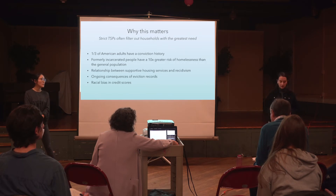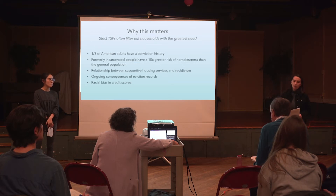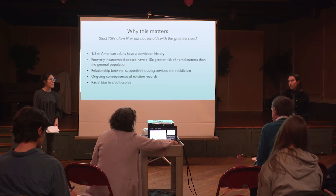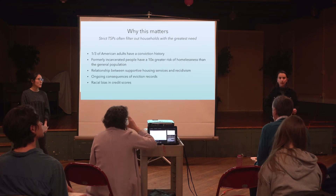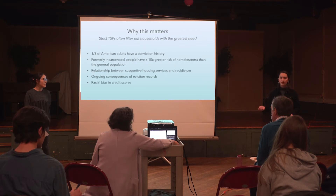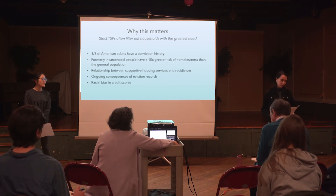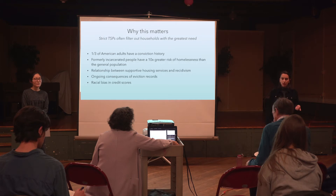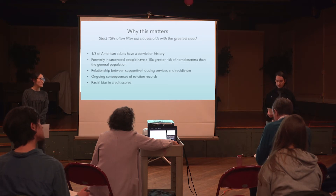People of color are disproportionately affected by the criminal justice system, and this has led to a lot of conversations about the disparate impact of the use of criminal history in tenant selection plans. In 2016, HUD ruled — and the Supreme Court also ruled — that housing providers are not allowed to have policies that are neutral on their face but actually have disparate impacts. Housing authorities must justify their denial based on criminal history by saying it was necessary to achieve a certain goal and served a legitimate purpose for safety.